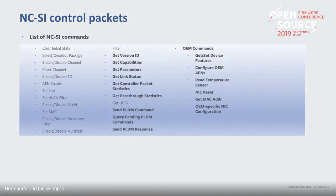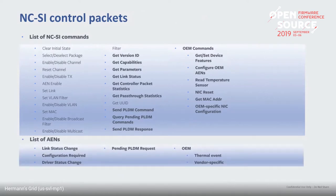Besides standard commands, different NIC vendors have their own OEM command extensions providing additional monitoring capabilities. Typically they include discovery commands to find what features and OEM commands they support, additional OEM AENs, the ability to do NIC reset (not possible in standard commands), and OEM-specific management and monitoring commands. Standard AENs in NCSI 1.1 include: link status change, configuration required, and driver status change. There's also a PLDM AEN, which lets the BMC know there are pending PLDM commands. OEMs can define their own AENs — for example, a thermal event AEN where you set a threshold and get notified when the NIC approaches it.